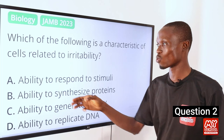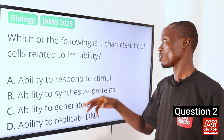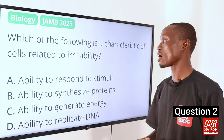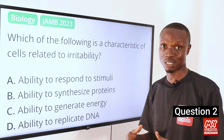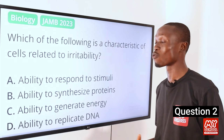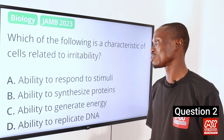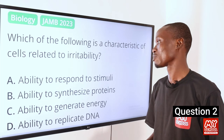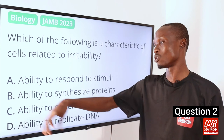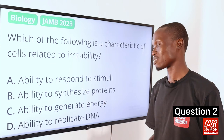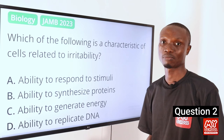The answer to this question is option A. We define irritability as the ability of cells to detect and respond to various stimuli or changes in the environment. That makes option A, ability to respond to stimulus, the correct answer.